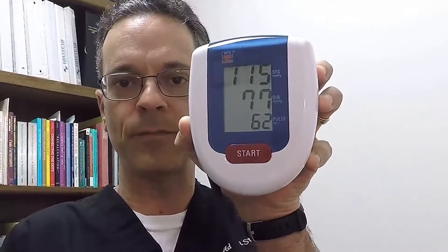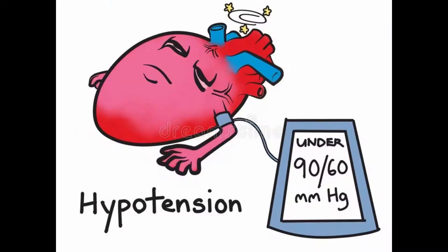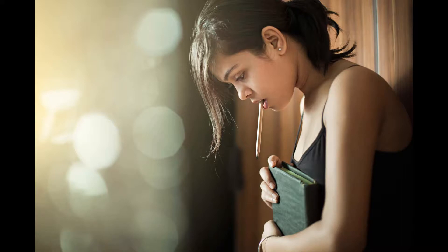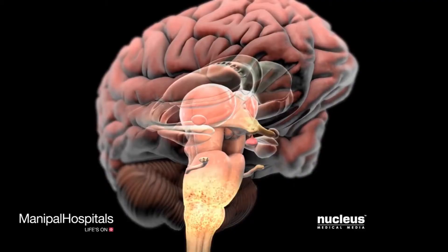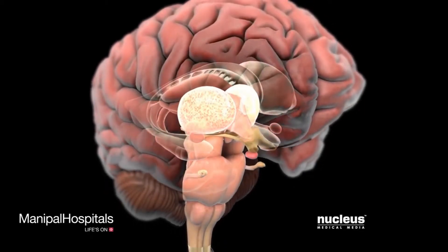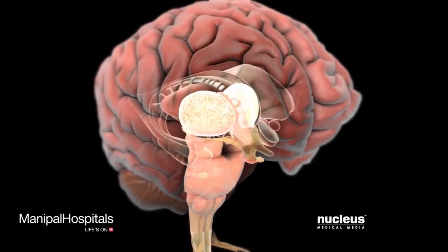People who always have low blood pressure have chronic asymptomatic hypotension. They usually have no signs or symptoms and need no treatment. The three main types of this kind of hypotension are orthostatic hypotension, neurally mediated hypotension, and postprandial hypotension.